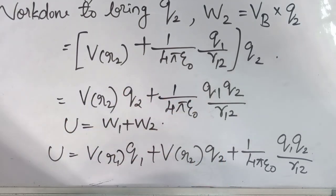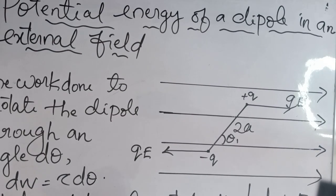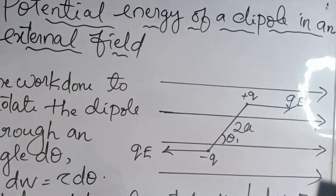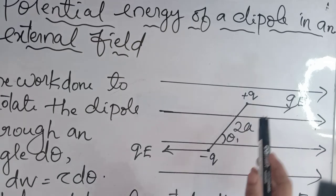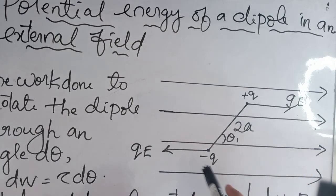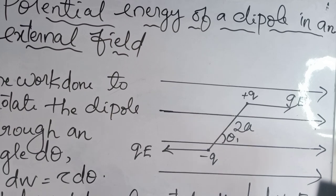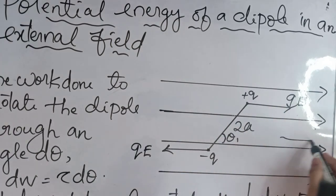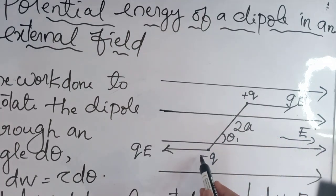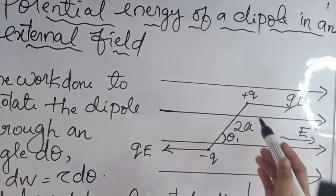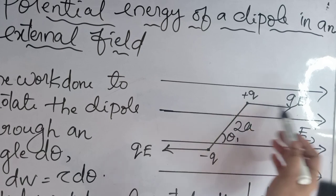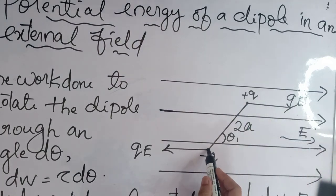The next topic is the potential energy of a dipole in an external field. A dipole consists of two equal and opposite charges separated by a small distance. We place this dipole in a uniform external electric field. The dipole has charges −q and +q separated by distance 2a, with dipole moment p. When placed in the field, two forces act in equal and opposite directions — one on +q in the direction of the field and one on −q opposite to it — each with magnitude qE.